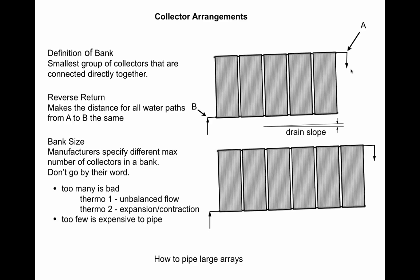Now let's go through collector arrangements. We define a bank as a group of collectors soldered directly to each other. The top drawing shows five collectors with B as the low point and A as the high point — this is called a reverse return: you go in lower left and come out upper right. If you follow a molecule of water from B to A through any possible path in any collector, all geometric path lengths are identical. That's what reverse return achieves — it helps balance the collectors and gives uniform flow to every one.